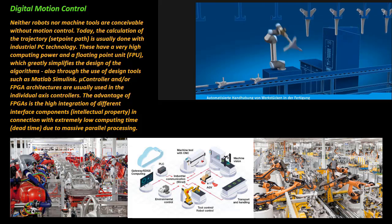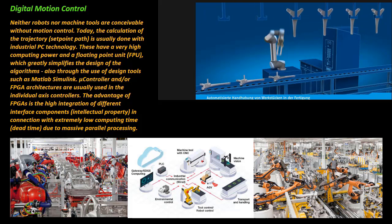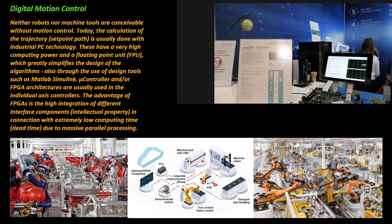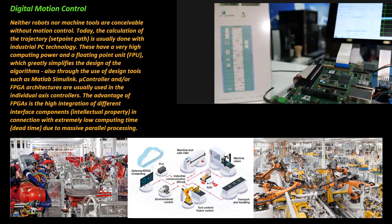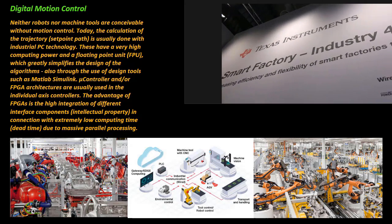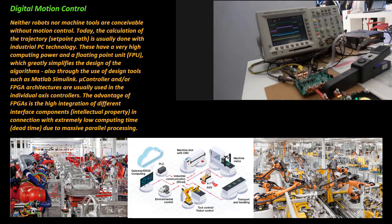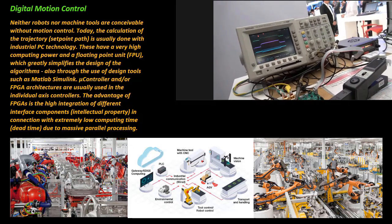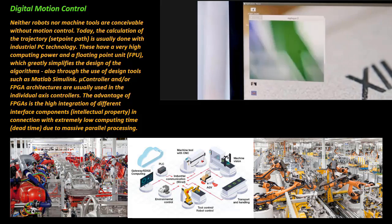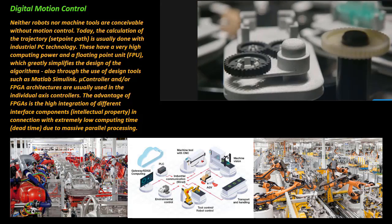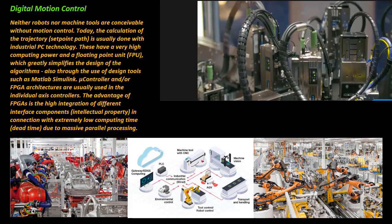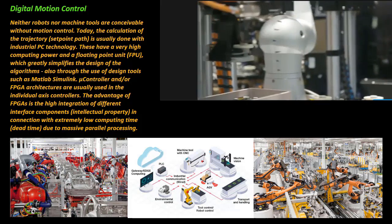Neither robots nor machine tools are conceivable without motion control. Today, the calculation of the trajectory is usually done with industrial PC technology. These have a very high computing power and a floating point unit which greatly simplifies the design of the algorithms also through the use of design tools such as MATLAB Simulink. Controller and or FPGA architectures are usually used in the individual axis controllers. The advantage of FPGAs is the high integration of different interface components in connection with extremely low computing time due to massive parallel processing.